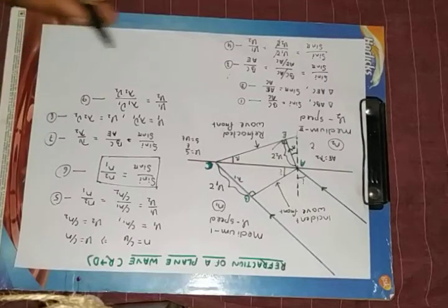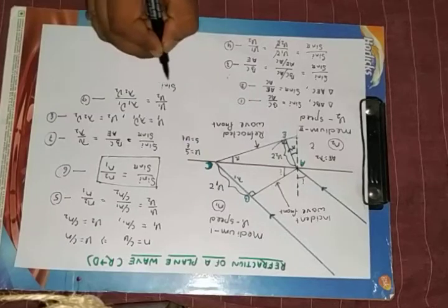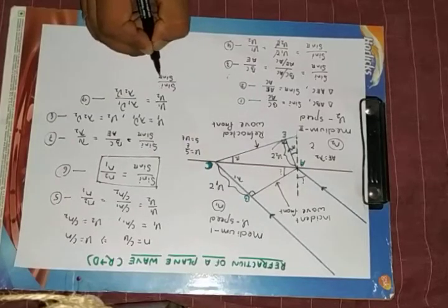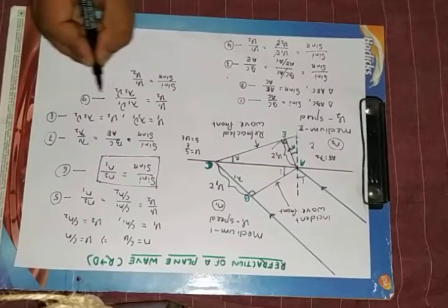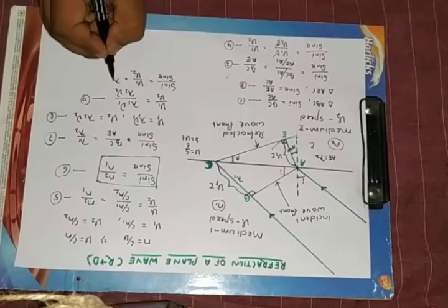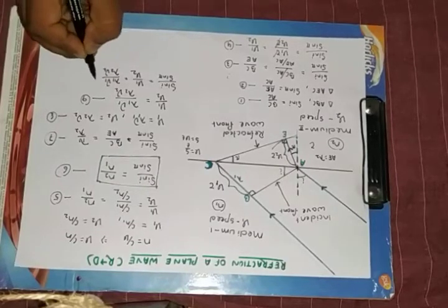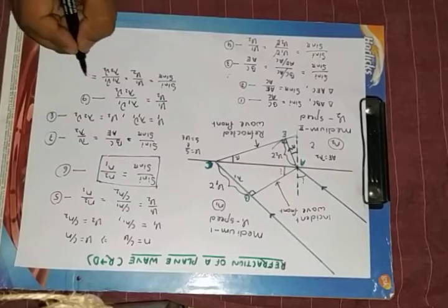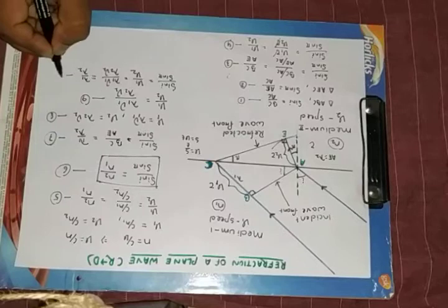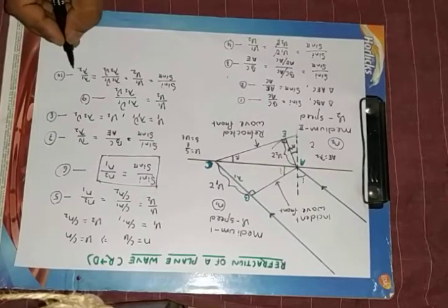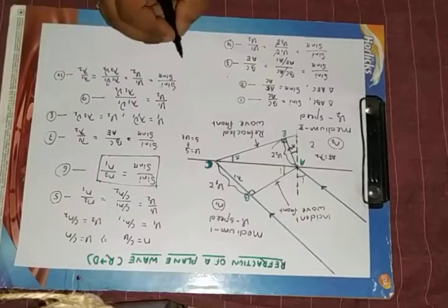if I compare these equations, I will get sin i by sin r is equal to v1 by v2. From equation 9, it is lambda 1 nu 1 by lambda 2 nu 2. Again, from equation 7, that is lambda 1 by lambda 2. So equation 10 is valid if and only if nu 1 is equal to nu 2.